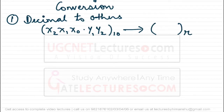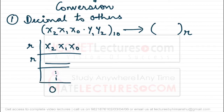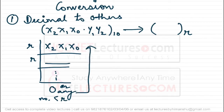r can be any value: 2, 8, 16 — any value. For the integral part, we are going to repeatedly divide this number with r. You divide, get a quotient, divide again with r, and continue until you get a remainder of 0 or any number less than r. This gives us the required integral part.